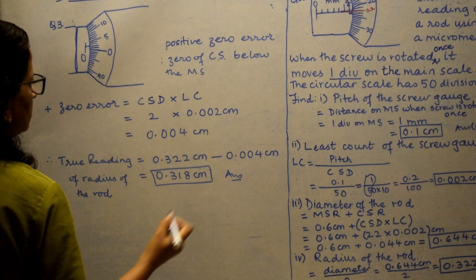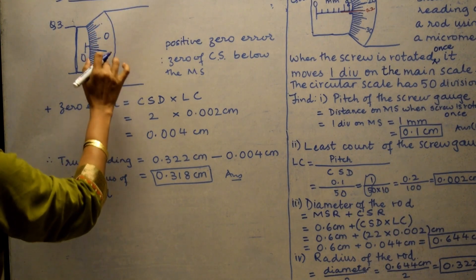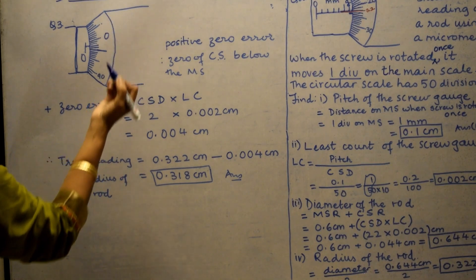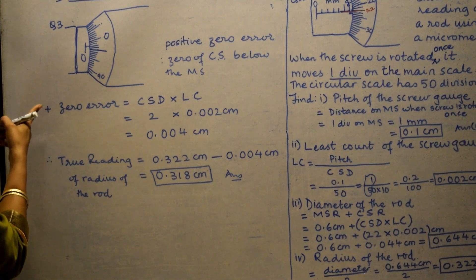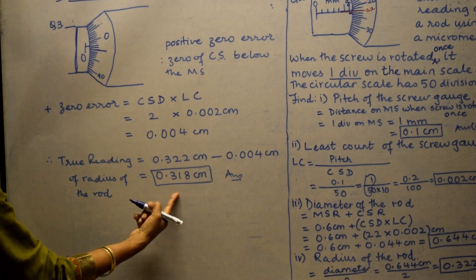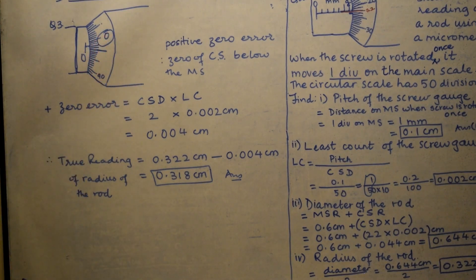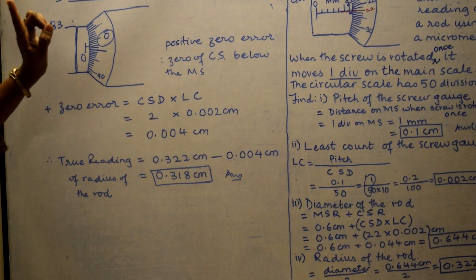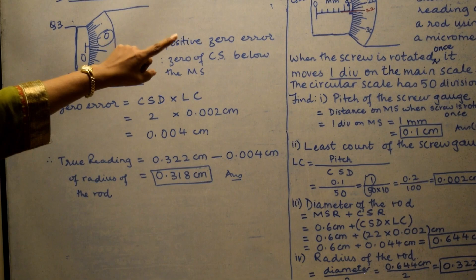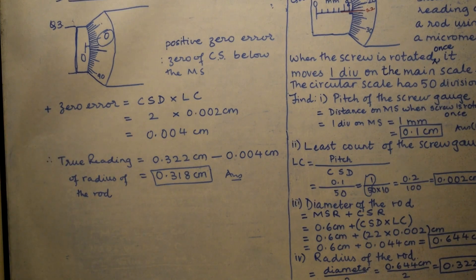Now suppose the zero had crossed over to the other side — that would give us a lesser reading, which is a negative zero error. If it is a negative zero error, we add the zero correction, and the reading would have been 0.322 + 0.004 = 0.326 centimeter. By now you should understand how to find the pitch, compute the least count, take the reading, and deal with positive and negative zero errors. Thank you for watching.